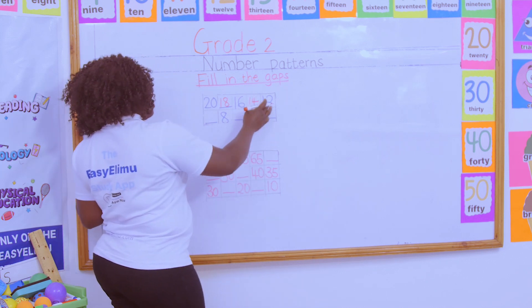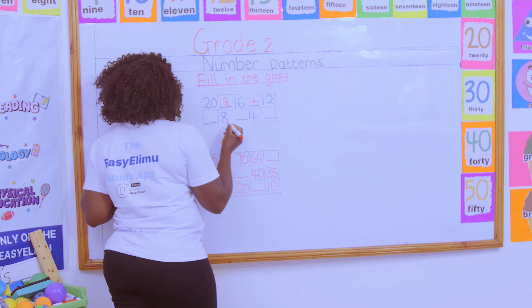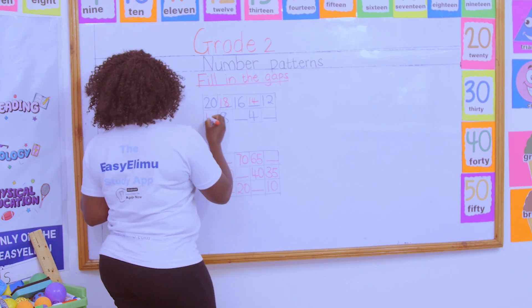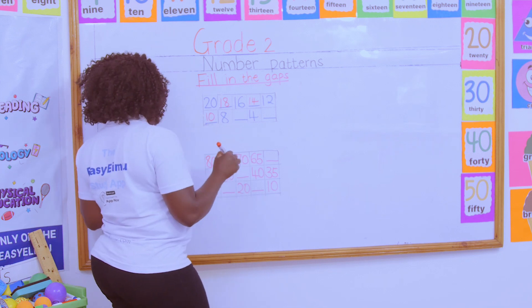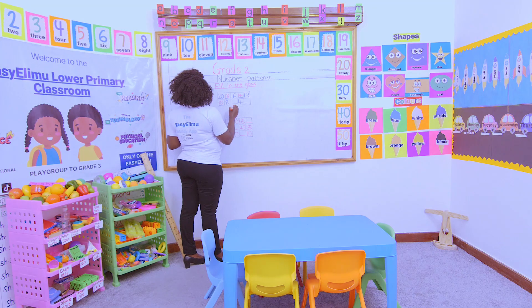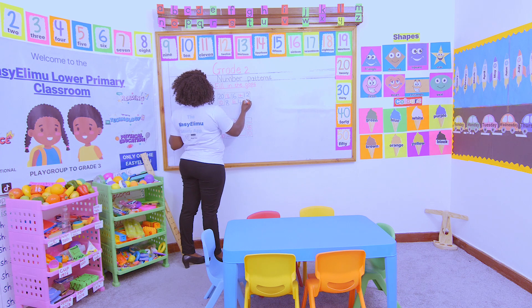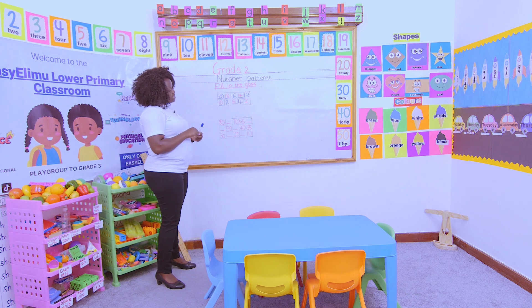Then we have 12. Which number comes before 12? Before 12 we have 10. Before 10 we have 8. Before 8 we have 6. Before 6 we have 4, and before 4 we have 2. Up to there — who has not gotten exactly what is supposed to be done with that number pattern?